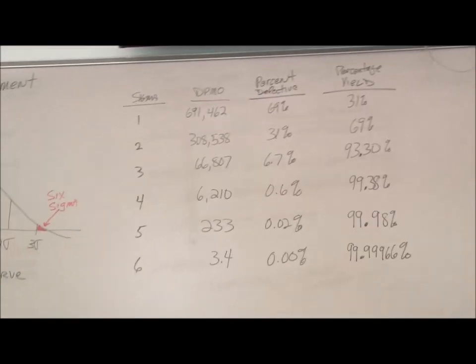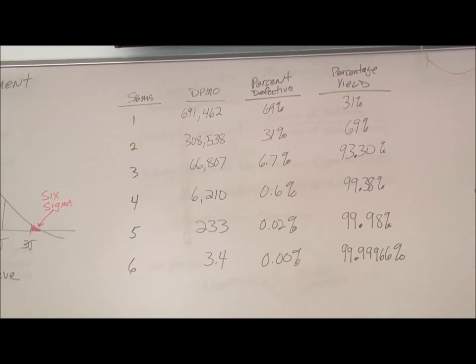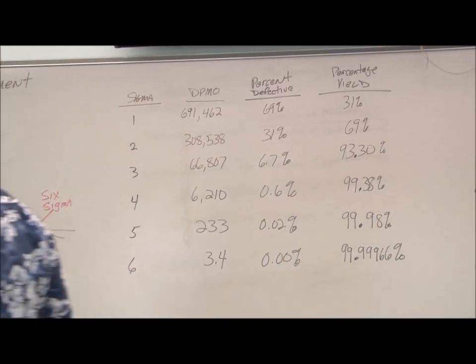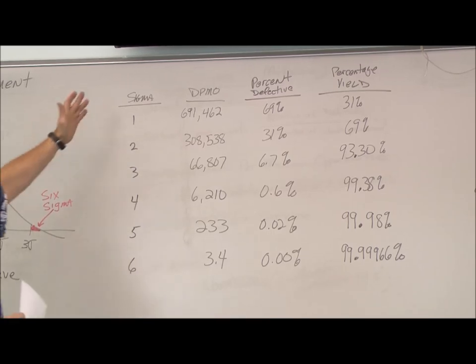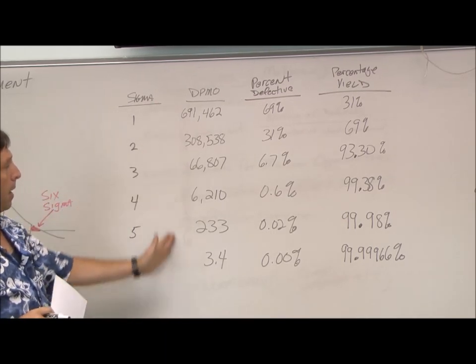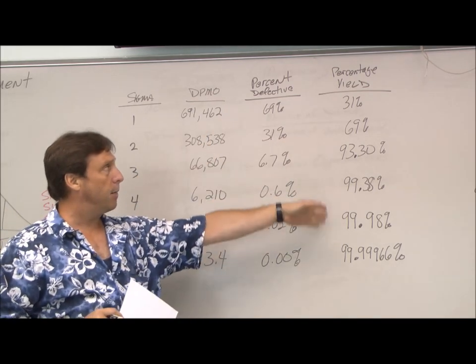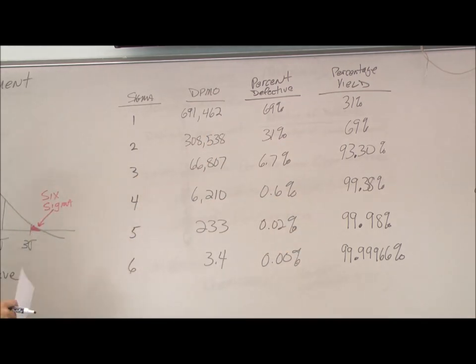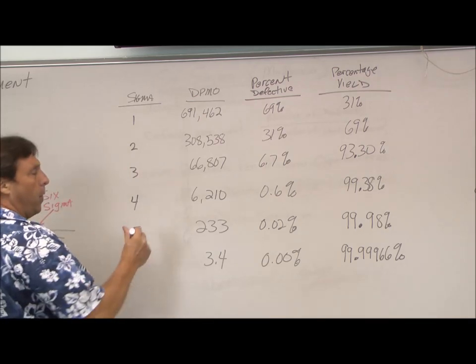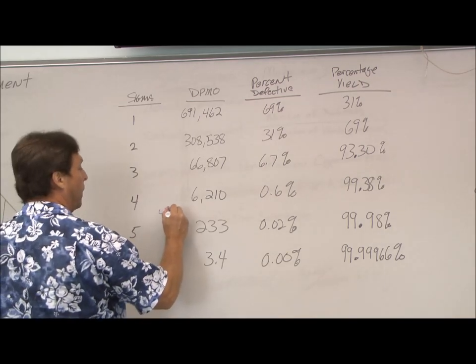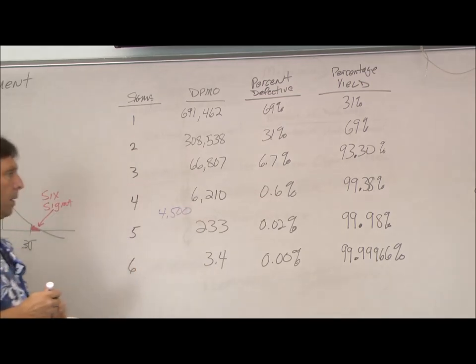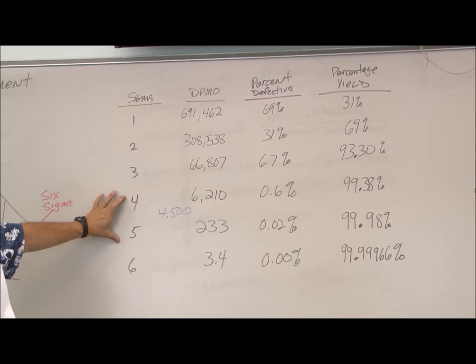I just wrote it out over here really quickly. You can see right here at my different sigma levels what's my DPMO, which is my defective percent, defective percent yield. We in our example had come up with 4,500. So our bank is operating between 4 and 5 sigma.